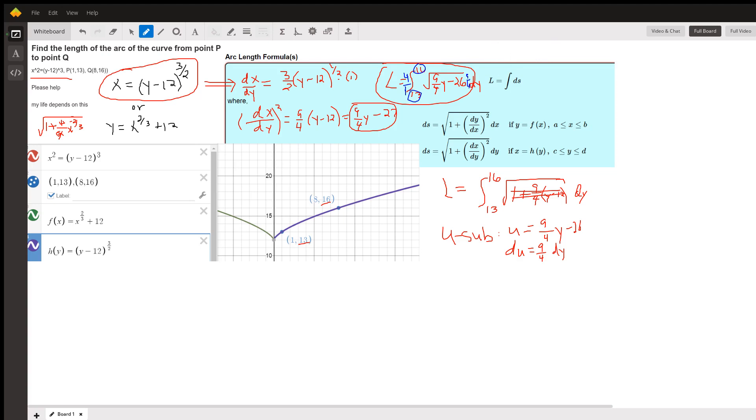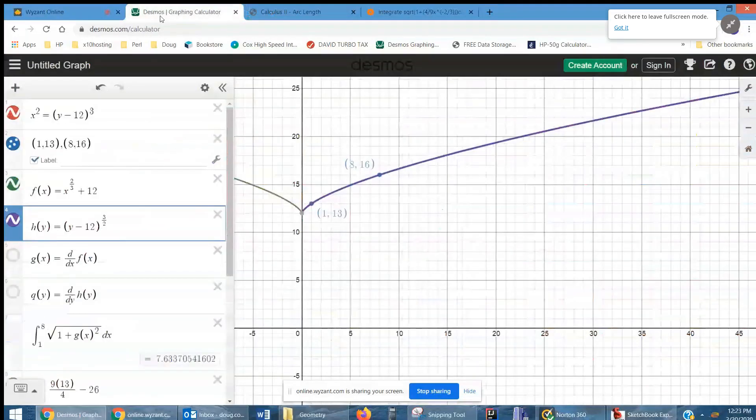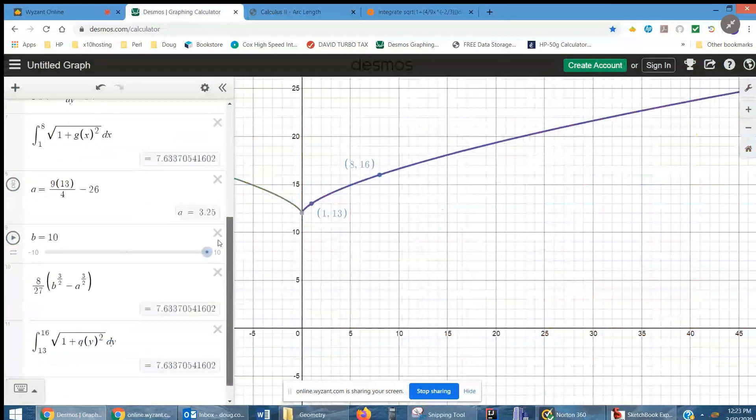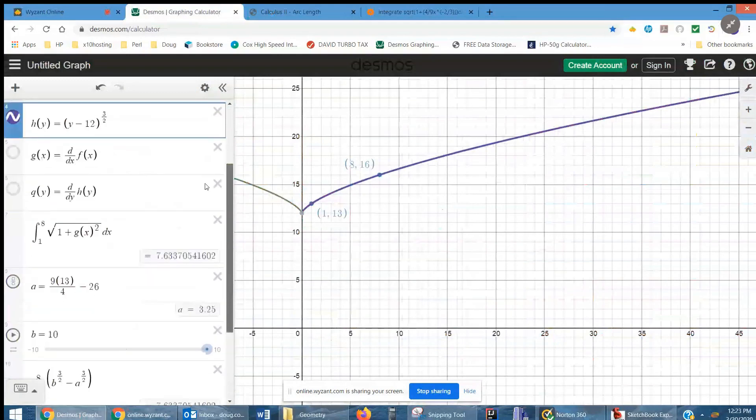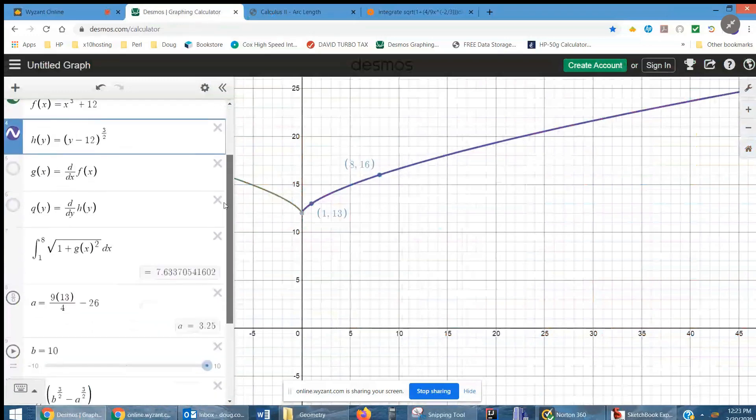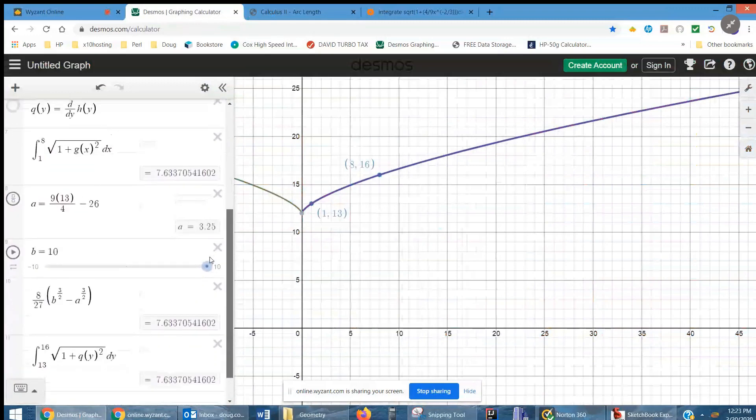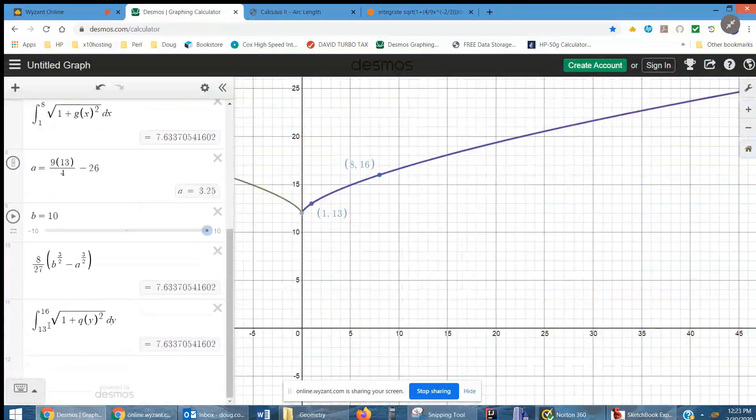We'll go to Desmos. And I'll show you that there's three different integrals here. G of x was the integral when I solved for y. And q of y was the integral when I solved for x. And you can see we get the same answer every time. OK, 7.633.